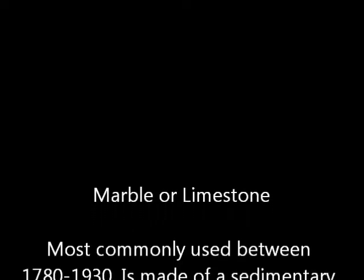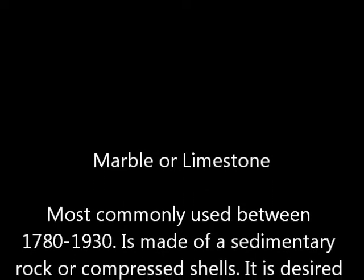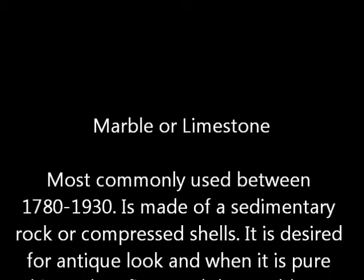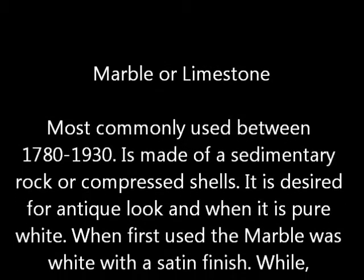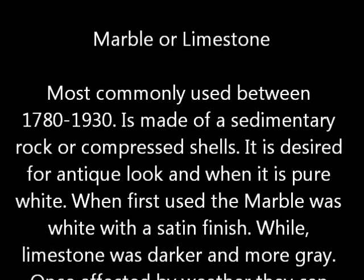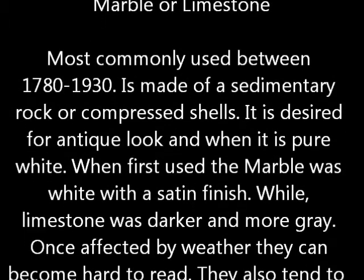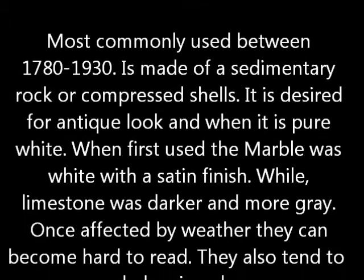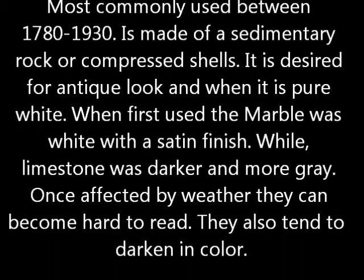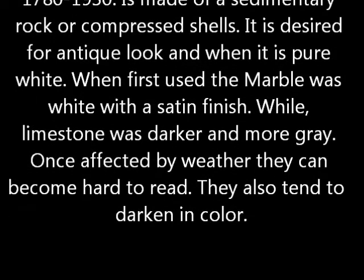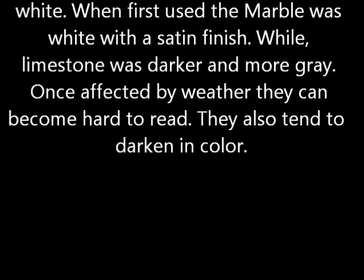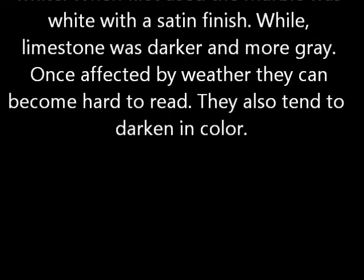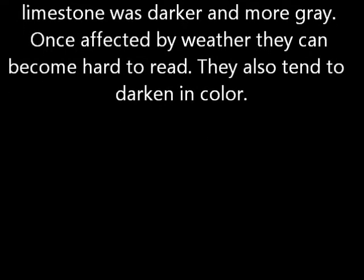Most commonly used between 1780 and 1930, marble is made of sedimentary rock or compressed shells. It is designed for an antique look, and when pure white, the marble had a satin finish. Limestone was darker and more grey. Once affected by the weather, they can become hard to read, and they also tend to darken in colour.